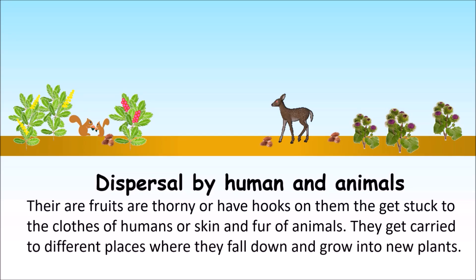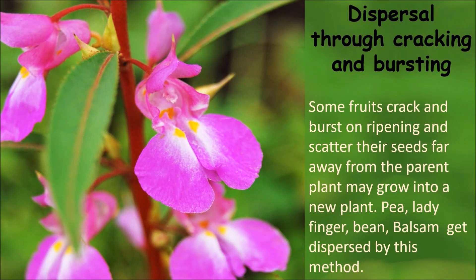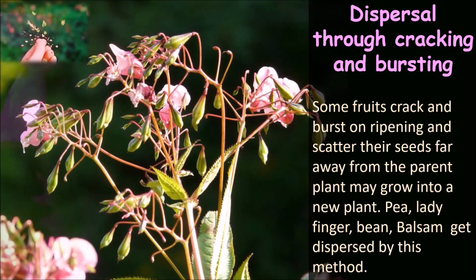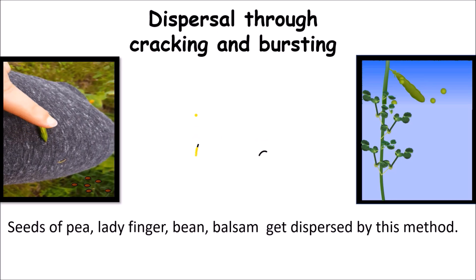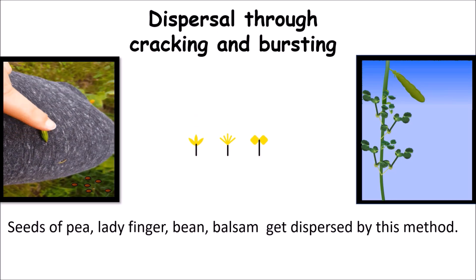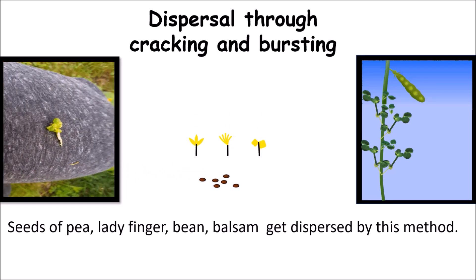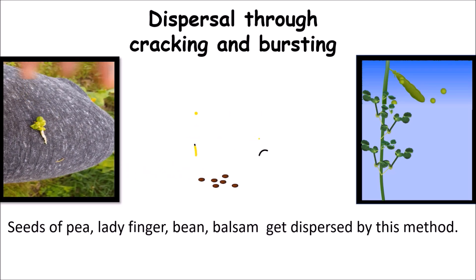Dispersal through cracking and bursting: Some fruits crack and burst upon ripening and scatter their seeds far away from the parent plant. These grow into new plants. Seeds of pea, ladyfinger, bean and balsam get dispersed by this method.